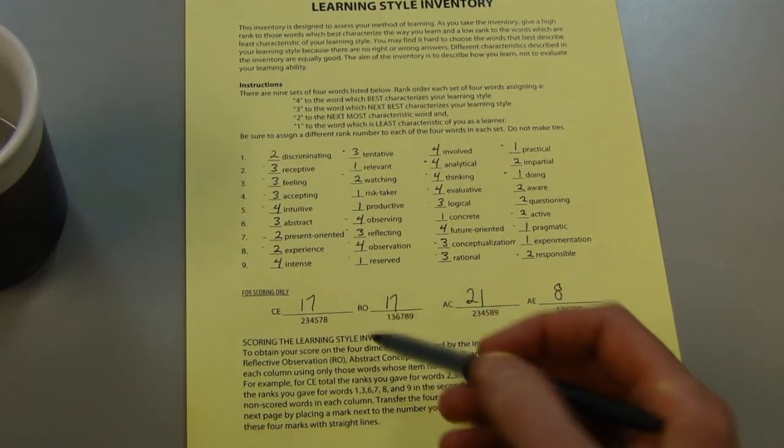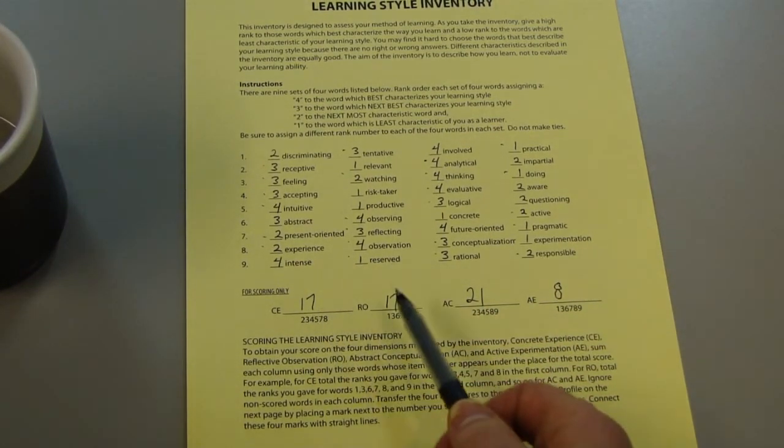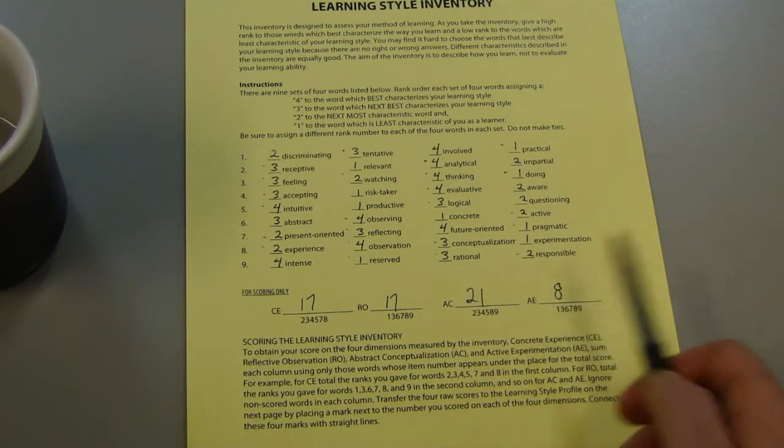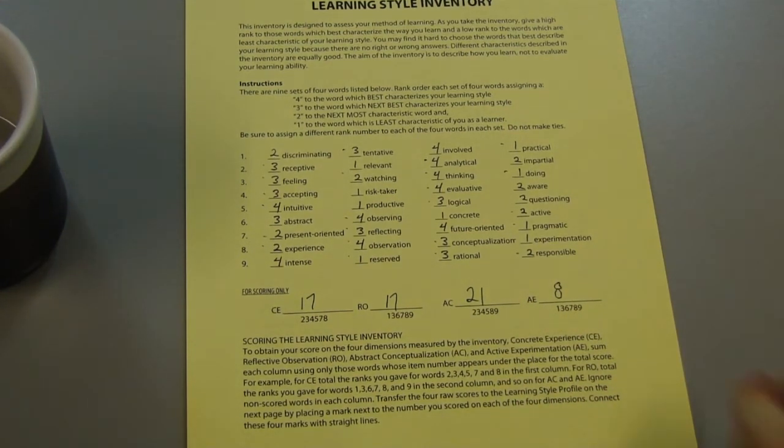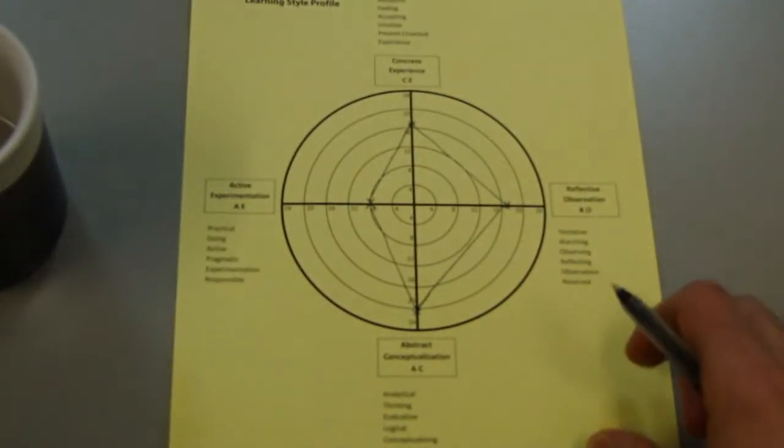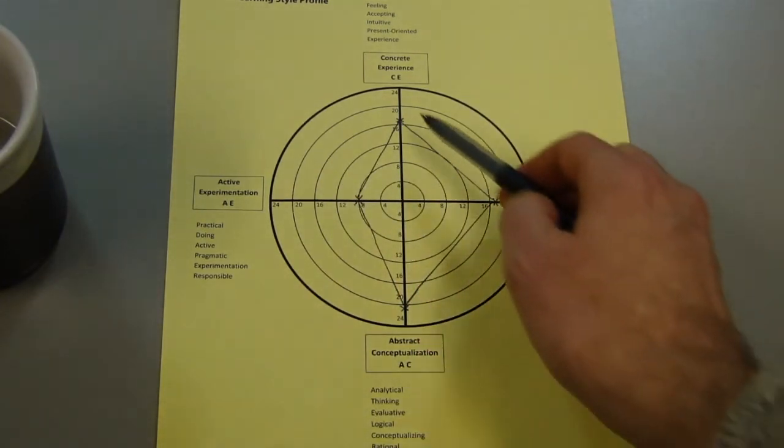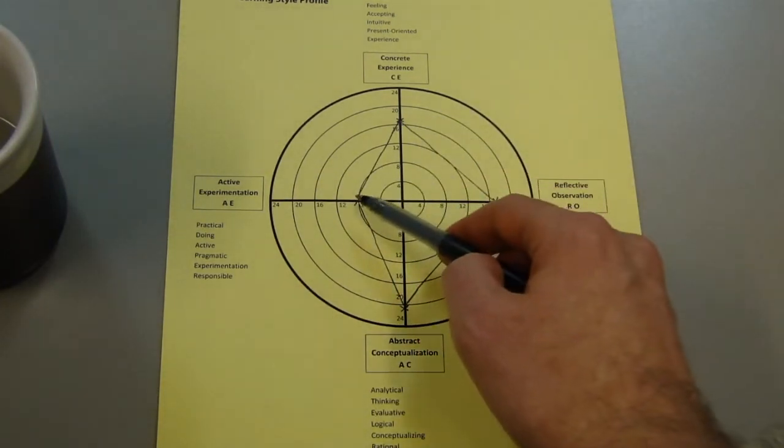Okay, so in this column I've got a 17, a 17, a 21, and an 8. So AC is my highest number, AE is my lowest number. And so then if I was to mark it on this little bullseye chart here, I get sort of a lopsided kite shape. There's my 8 there, there's my 21 there.